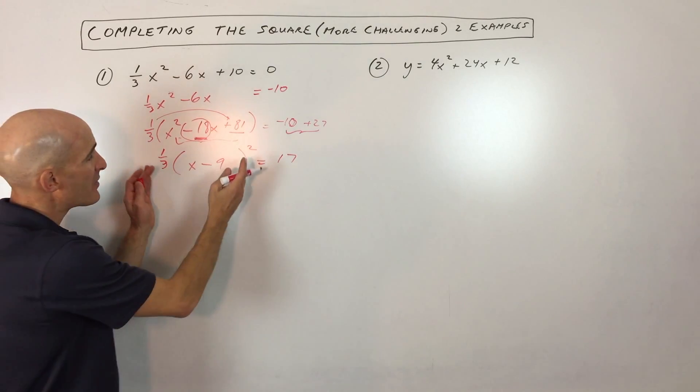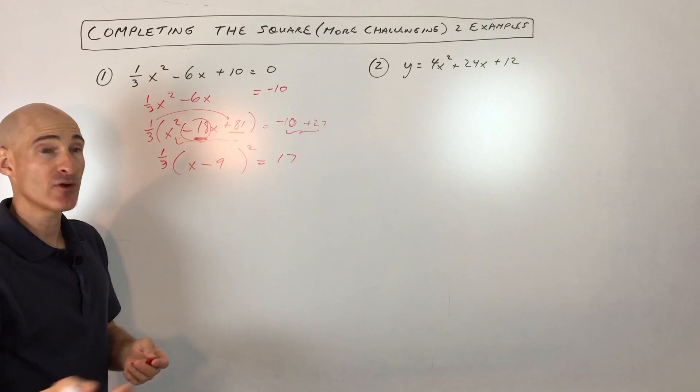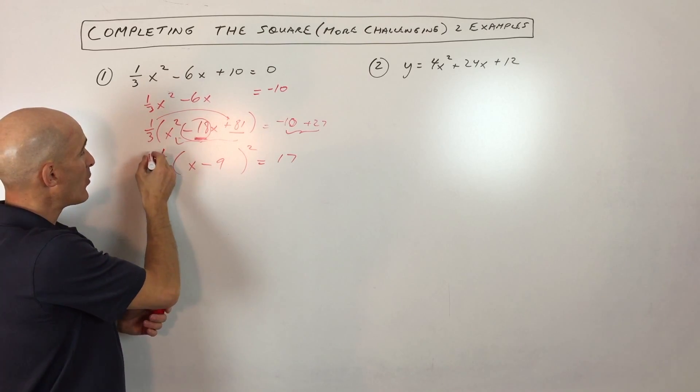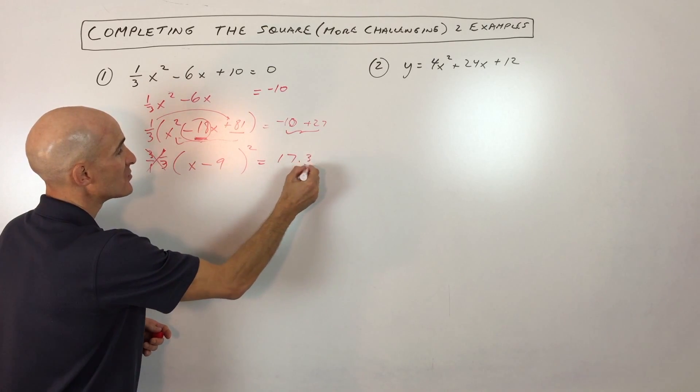We want to solve for x. We want to think about working from the outside in towards x by doing the opposite operation. So the opposite of multiplying by one-third would be to multiply by the reciprocal, 3 over 1. So let's do that to both sides.